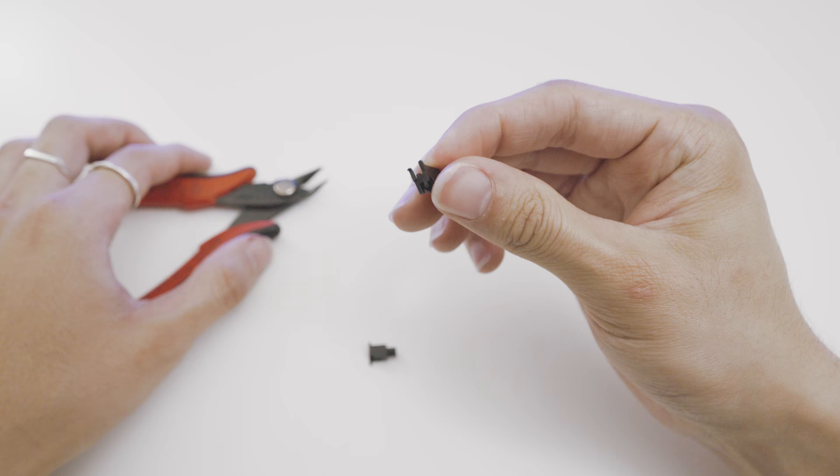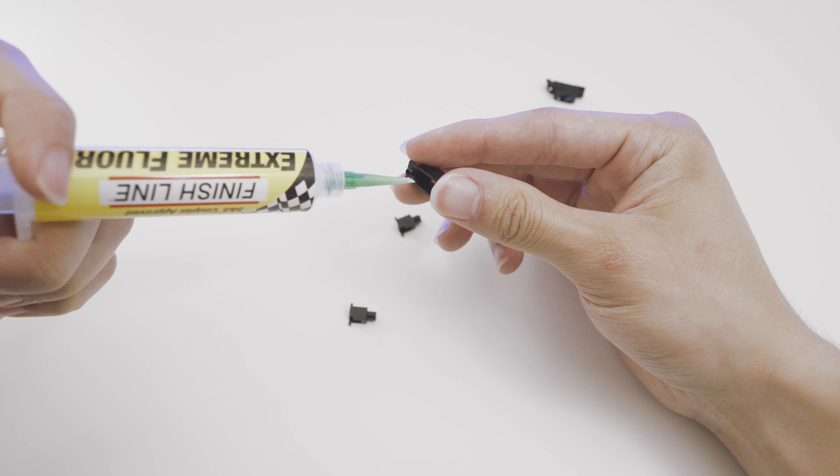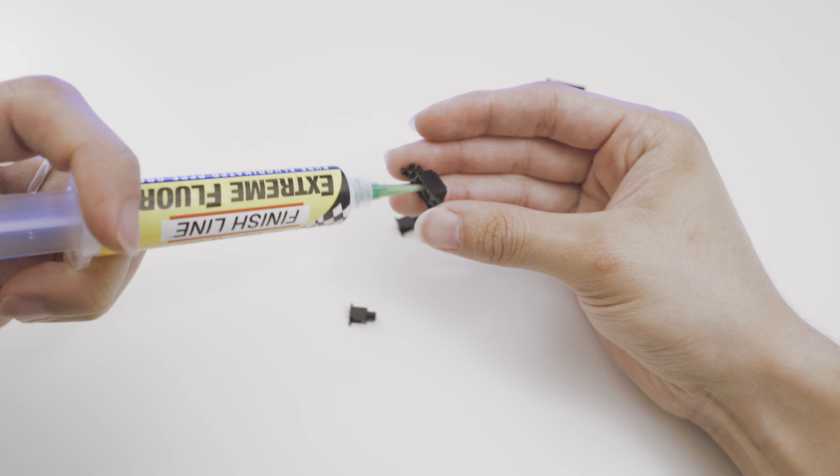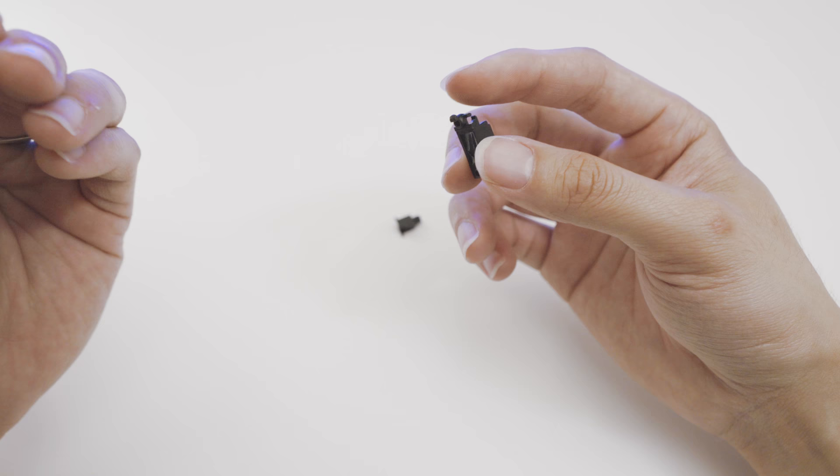Next up, we're going to use the teflon grease. I apply this to anywhere where plastic touches plastic. I apply a small amount to the inside of the stabilizer on both sides of the housing, like so. I apply a moderate amount. Once that's done, assemble the stabilizer back together.